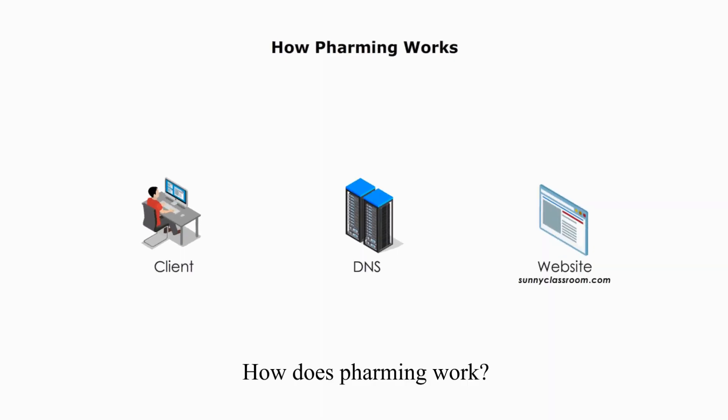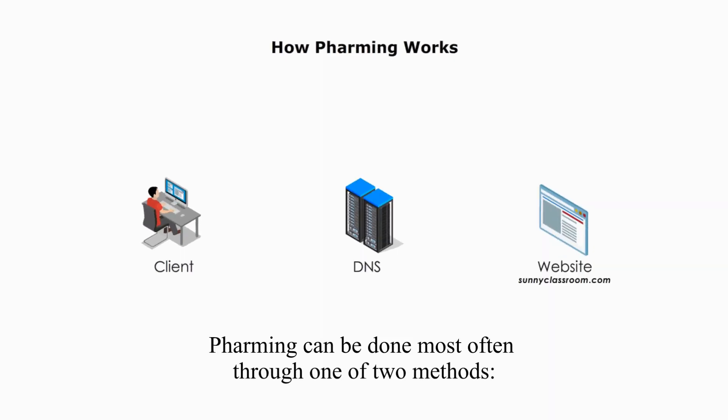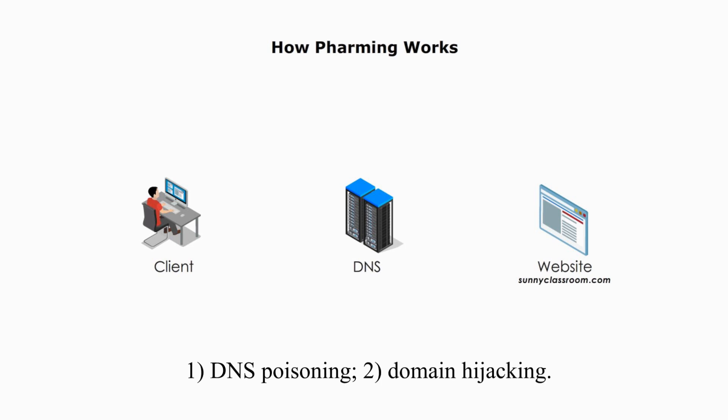How does pharming work? Pharming can be done most often through one of two methods: 1. DNS poisoning, 2. Domain hijacking.